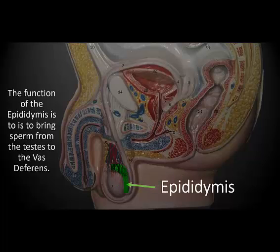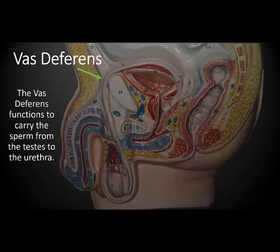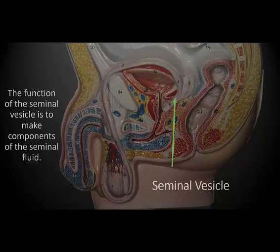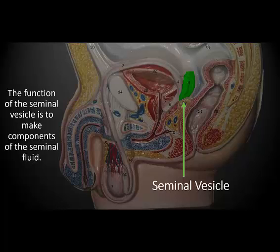Once the sperm are formed, they will then enter into the epididymis. From the epididymis, the sperm will then travel to the vas deferens. At the end of the vas deferens lies a seminal vesicle. The seminal vesicle will make components that are going to contribute to the seminal fluid.